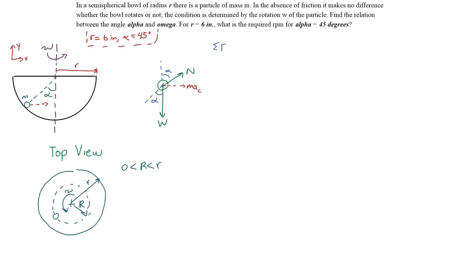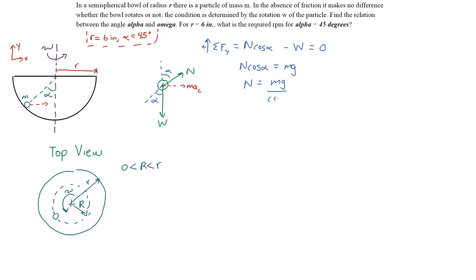Summing the forces in the y direction, where up is positive: N·cos(α) − W = 0. That equals zero because the particle is not moving up or down — it stays in plane and simply rotates. Therefore, N·cos(α) = mg, and solving for the normal force gives N = mg / cos(α).